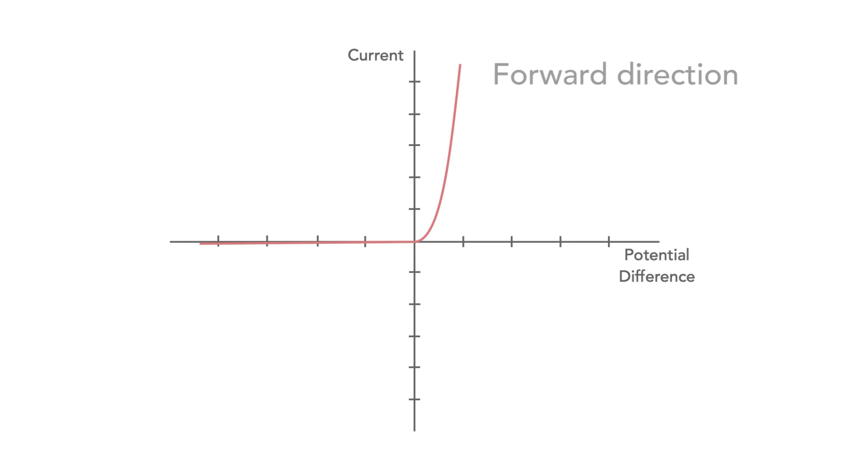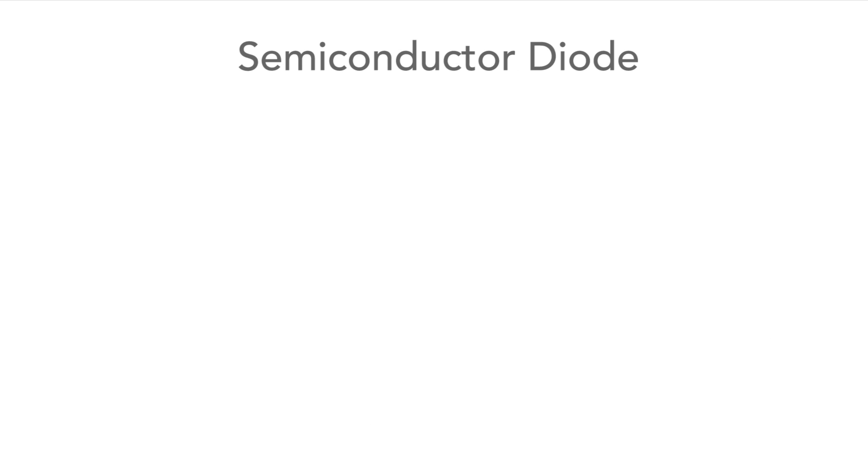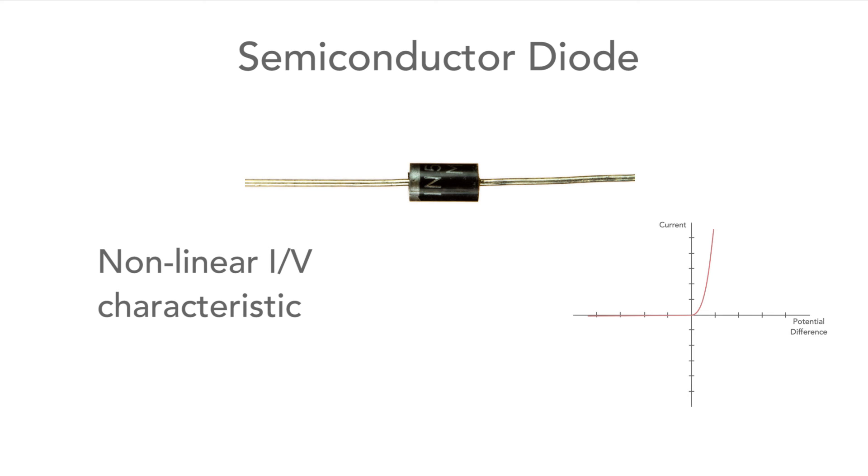It conducts in what is called the forward direction after an initial turn-on voltage is exceeded. However, in the reverse direction it doesn't conduct at all. So we can see the semiconductor diode has a non-linear relationship between current and voltage, and therefore it is also non-Ohmic.